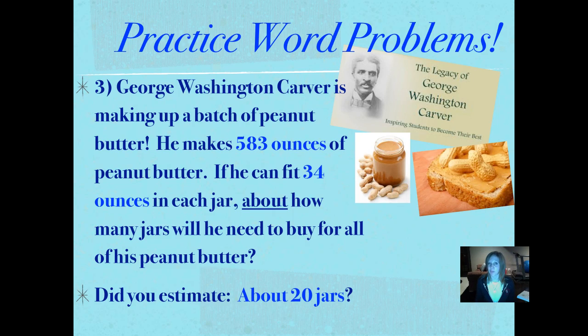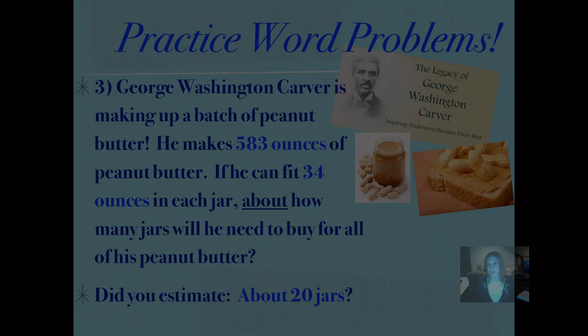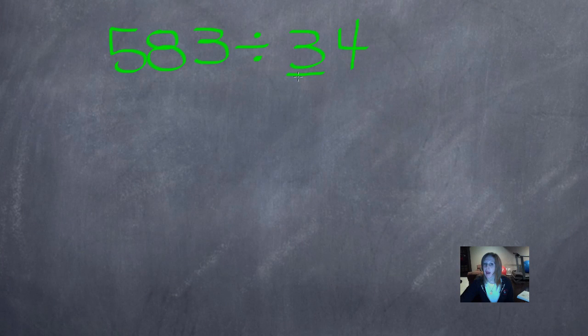Did you estimate about 20 jars? Let's see how we did that. So I'm going to round to the greatest place value position in my divisor and that gives me 30. Remember rounding is find your place, look next door, 5 or greater, add one more. And I didn't add one more because it wasn't 5 or greater.